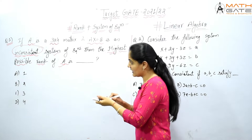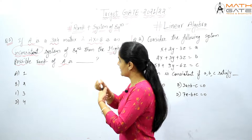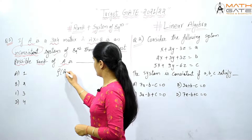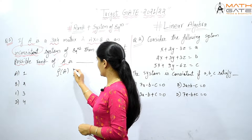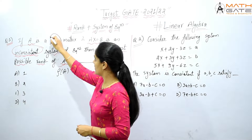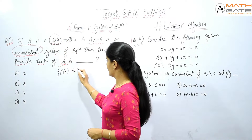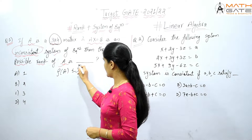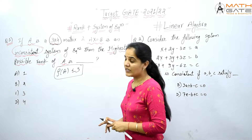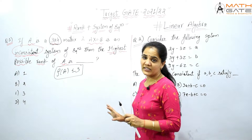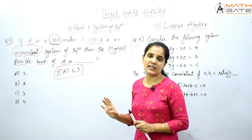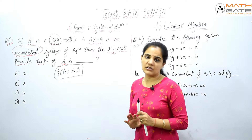Now let's talk about the rank. Matrix A is a 3×4 matrix, so the rank of A should be minimum of m and n — that is, less than or equal to 3. So if there is no extra condition, rank of A is less than or equal to 3.